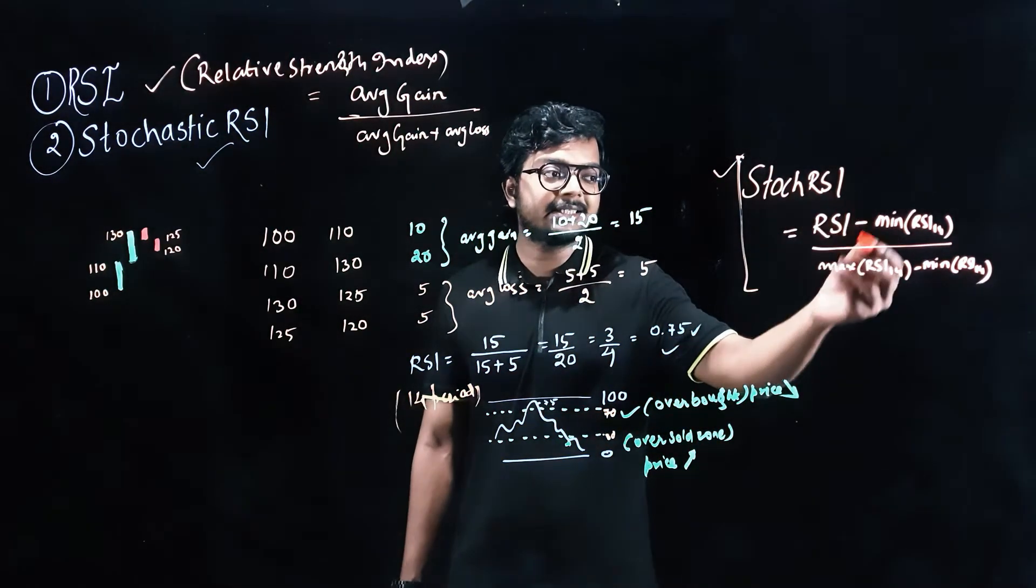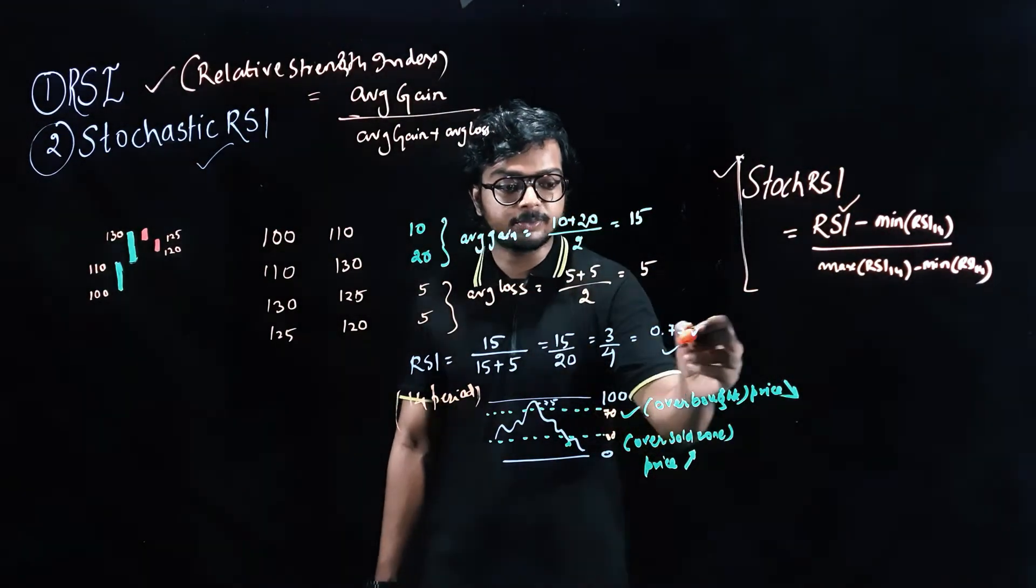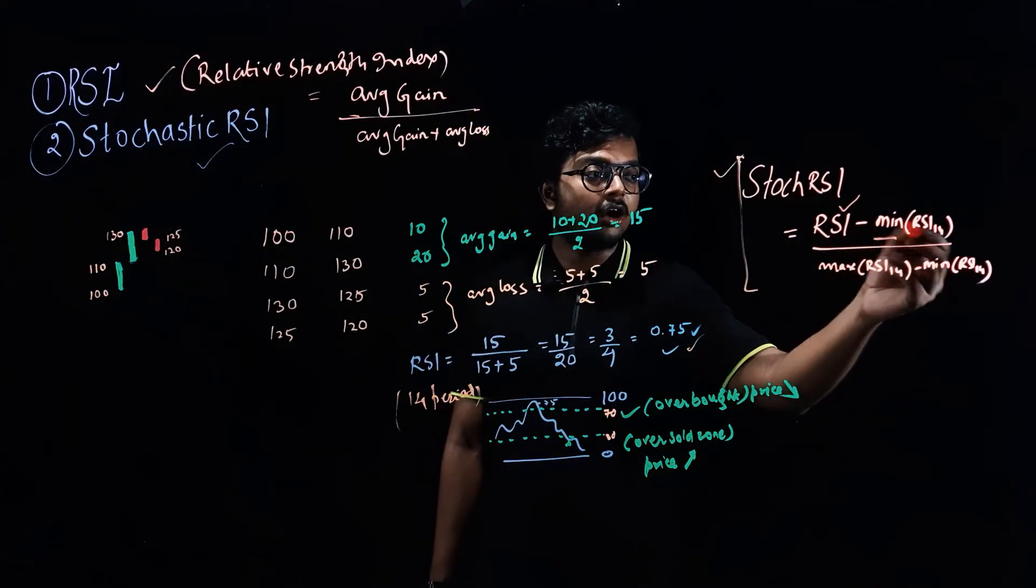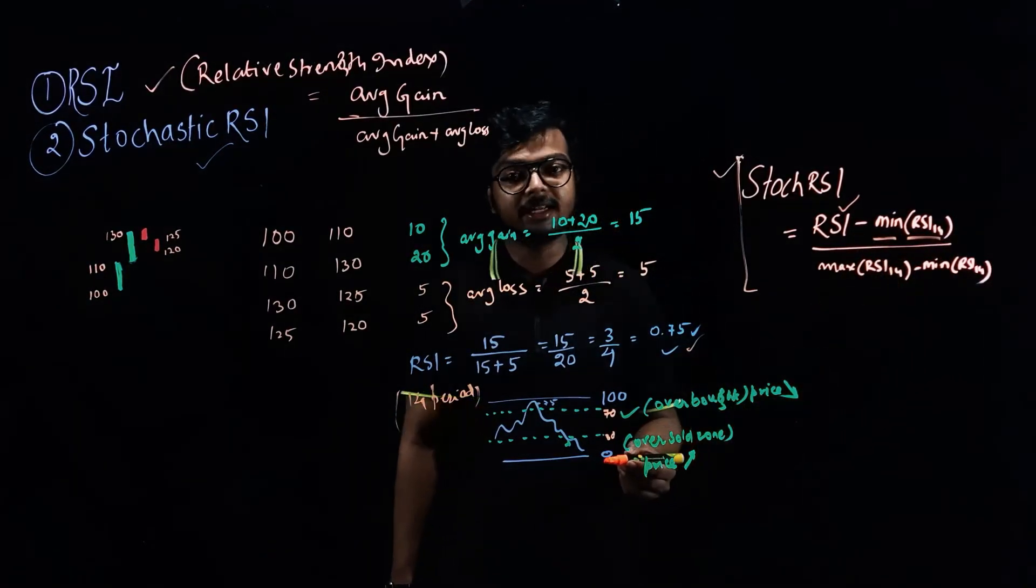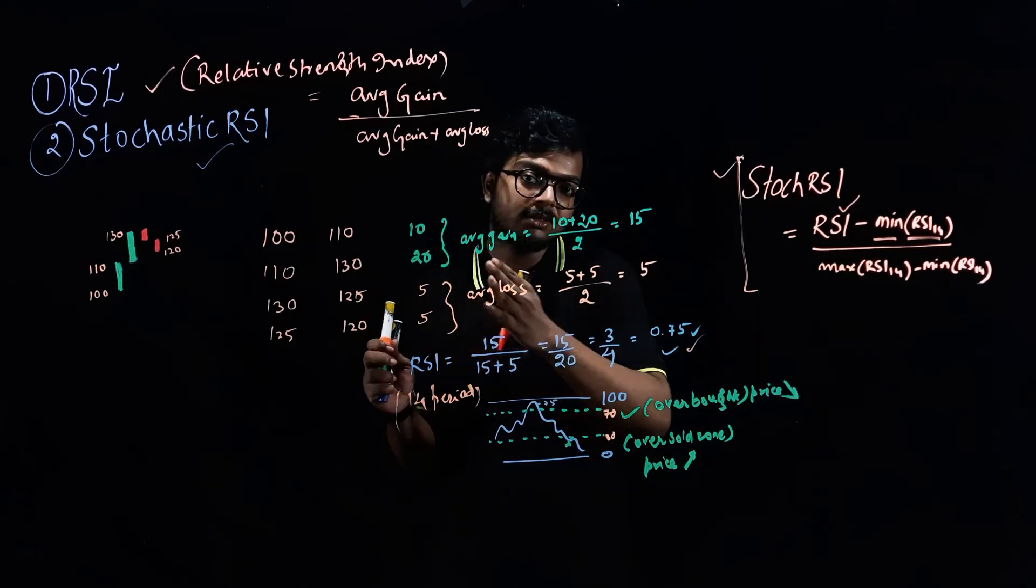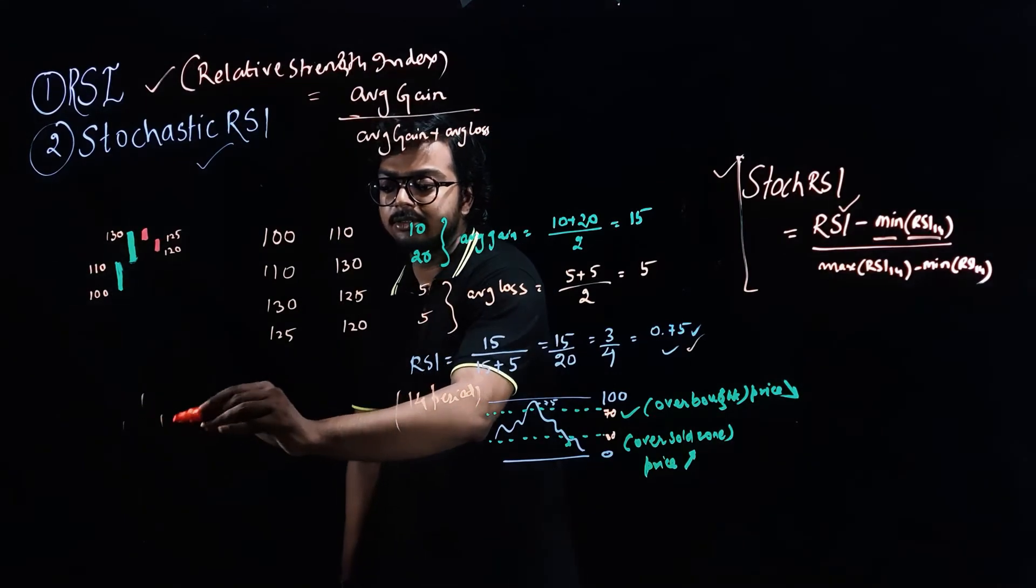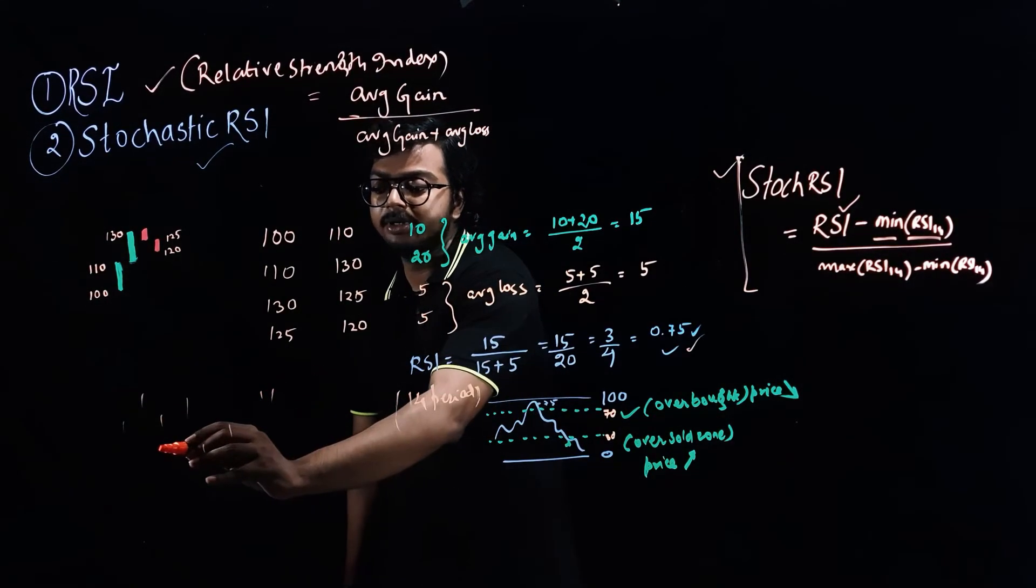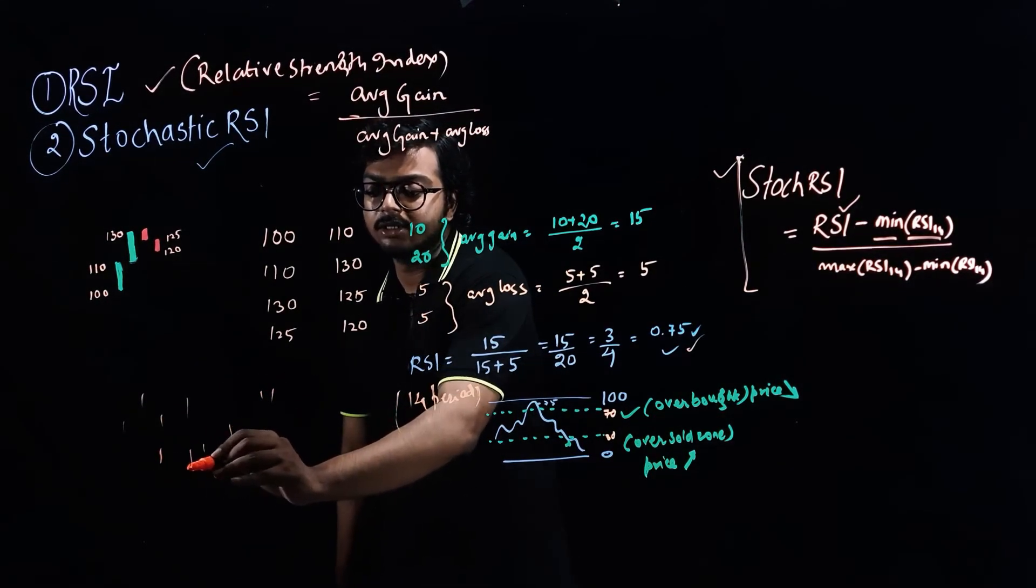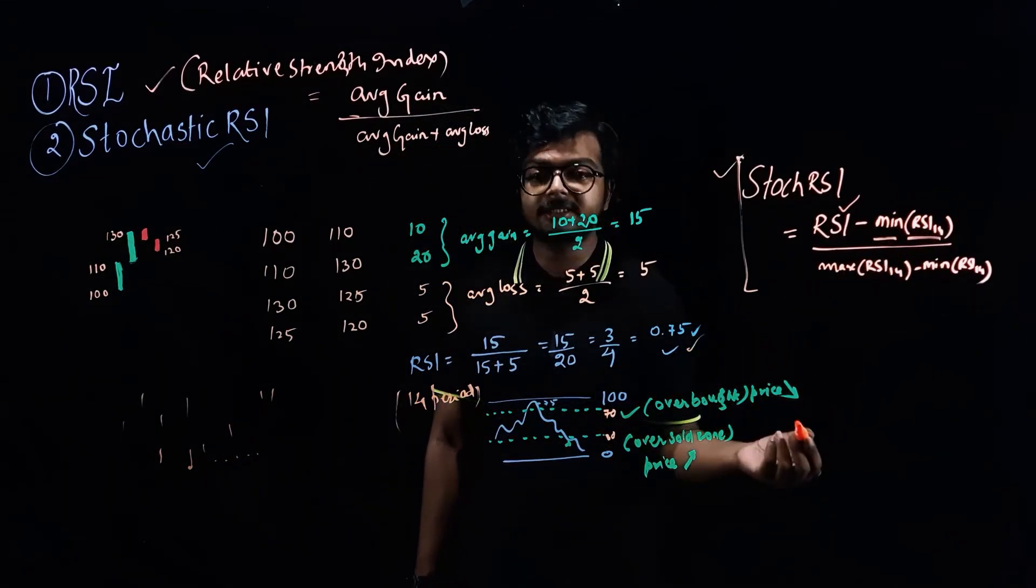So Stochastic RSI is computed by first you compute the RSI just like we computed here. Then you compute the mean of the last 14 RSI. So there would be candles, right? So you are computing RSI at each level. So say for example there are a lot of candles here. So here there would be one RSI value, here there will be another RSI value and so on.